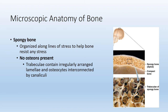Everything discussed so far about the osteon and cells applies to compact bone — osteons are only present in compact bone as its structural unit. Spongy bone, by contrast, has lots of trabeculae and passageways for red and yellow marrow, with no osteons. However, spongy bone still has lamellae and osteocytes that communicate with each other utilizing canaliculi.